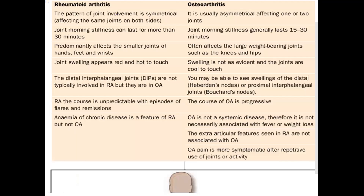For a quick differentiation: rheumatoid arthritis has a symmetrical pattern of joint involvement, while osteoarthritis is usually asymmetrical. Morning stiffness lasts more than 30 minutes in rheumatoid arthritis versus 15-30 minutes in osteoarthritis. Rheumatoid arthritis predominantly affects smaller joints of hands, feet, and wrists; osteoarthritis often affects large weight-bearing joints like knees and hips. Joint swelling is red, warm, and hot to touch in rheumatoid arthritis, whereas in osteoarthritis swelling is less evident and joints are cool to touch. DIP joints are not typically involved in rheumatoid arthritis but are in osteoarthritis, where you may see Heberden's and Bouchard's nodes.